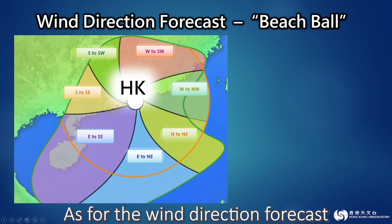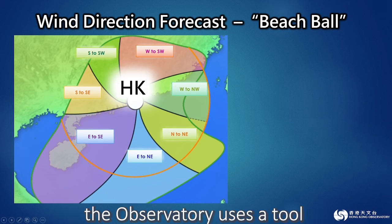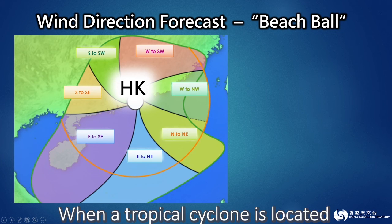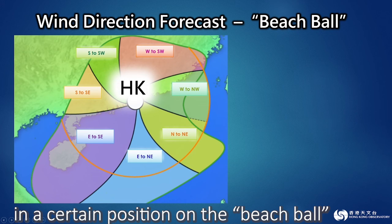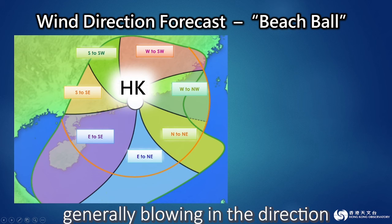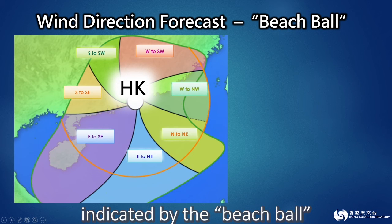As for the wind direction forecast, the observatory uses a tool known as the beach ball. When a tropical cyclone is located in a certain position on the beach ball, the winds in Hong Kong will be generally blowing in the direction indicated by the beach ball.